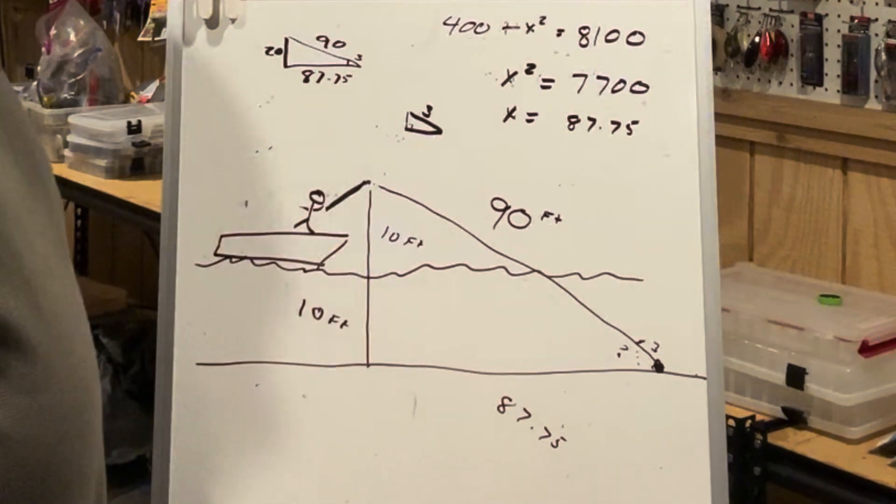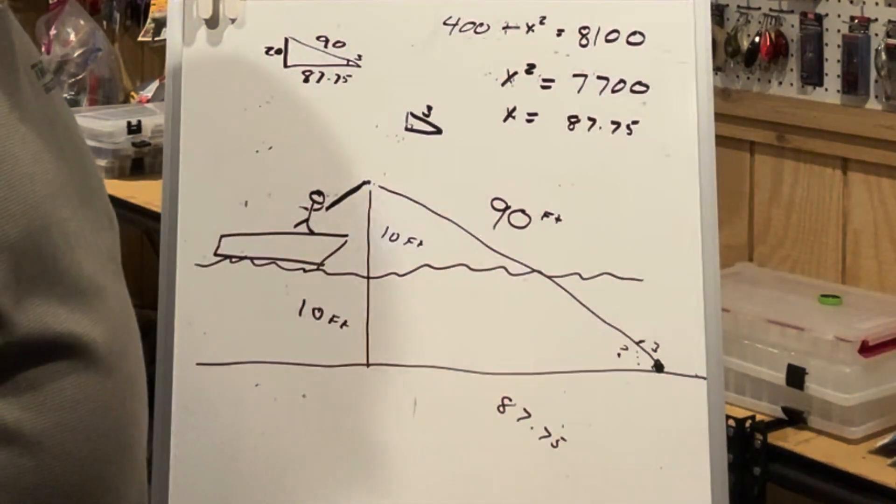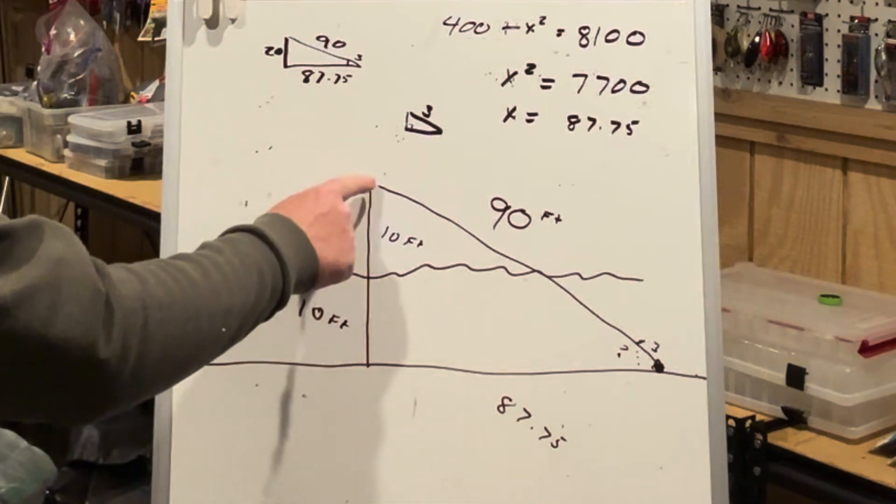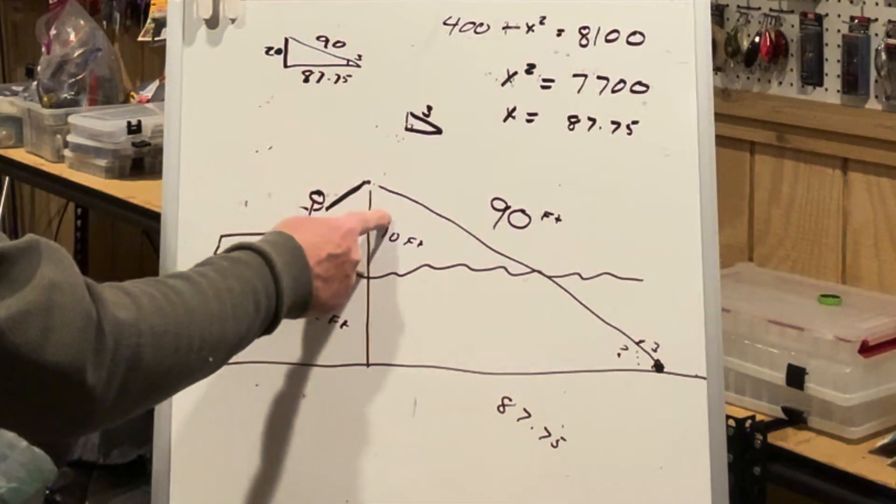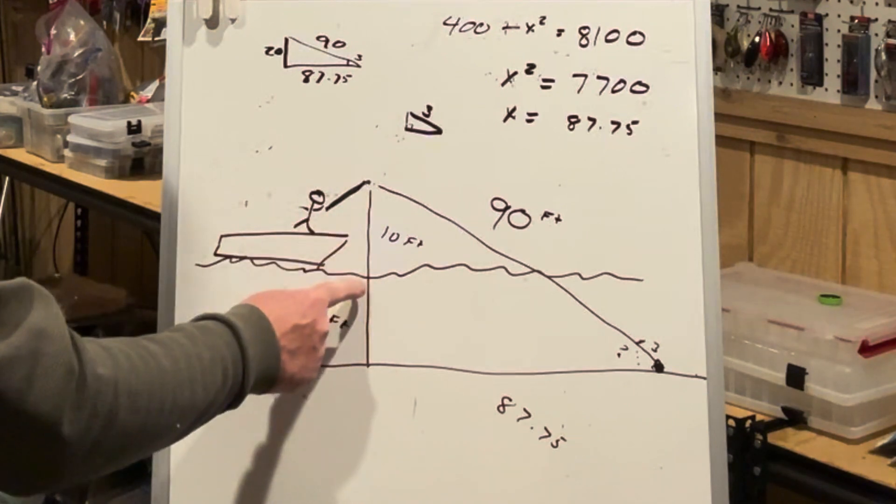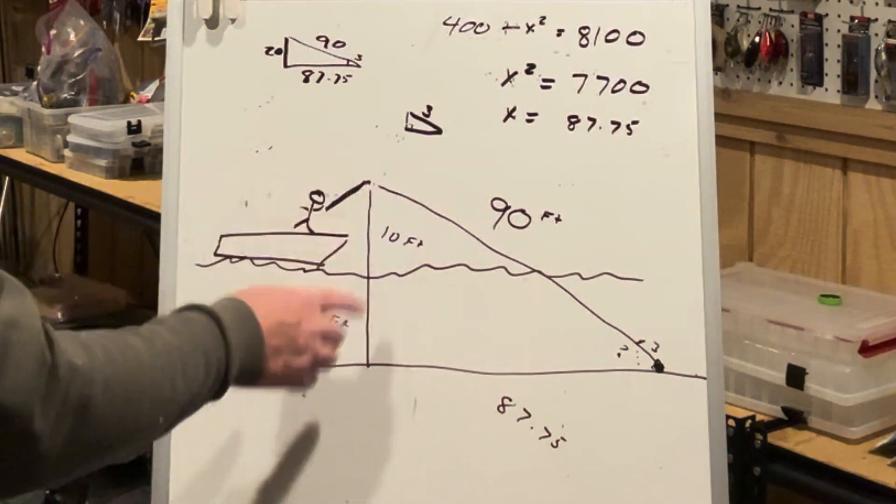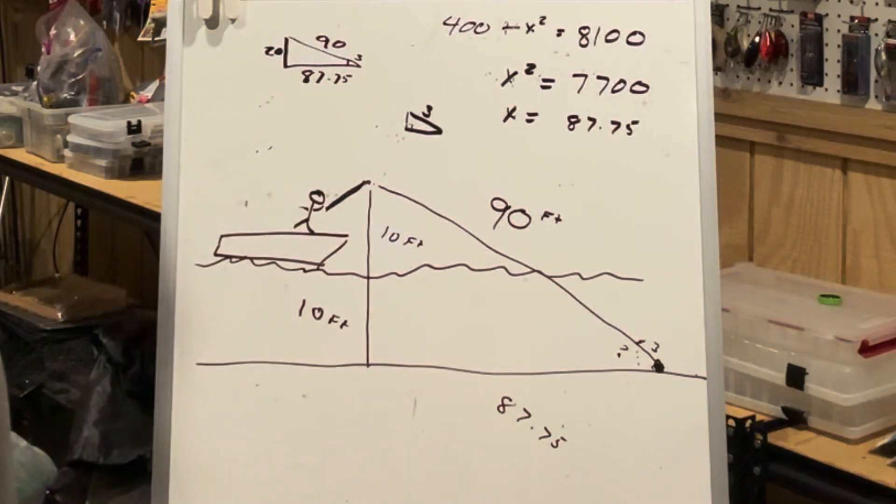We're talking about the Pythagorean theorem here, guys. Don't let that scare you away yet. We've got a total of 10 feet above the water and 10 feet depth. So that's going to be 20 feet on that right angle.